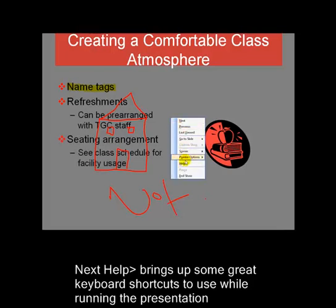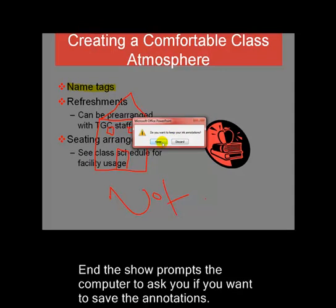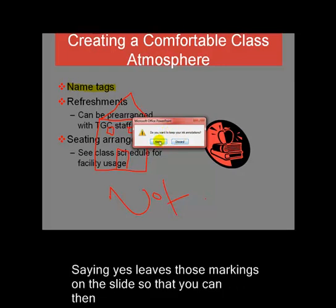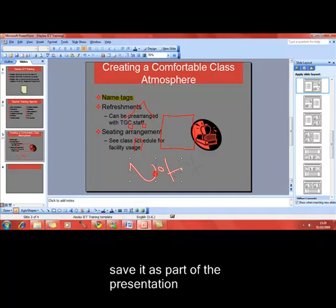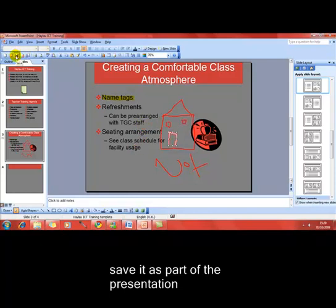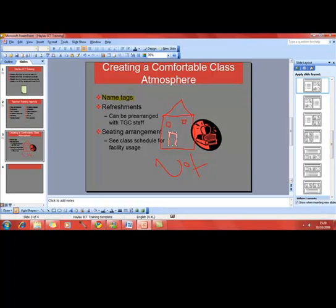Finally, we can right-click and End the Show. That asks: do you want to keep your ink annotations? If you keep them, it allows you to save them as part of the presentation for future use. If you discard them, they just disappear. I'll choose Keep just to show you — and then we can see on the slide that the annotations we made are nice and apparent. You can move those around as well. If you want to keep those annotations for future use, don't forget to save your presentation. So that is controlling the slideshow whilst delivering your presentation using the on-screen menus.